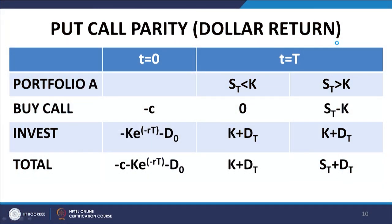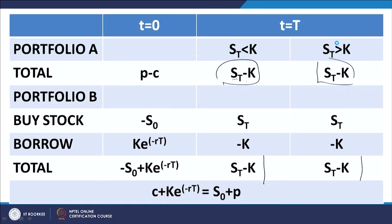We have talked about put-call parity in a very restricted scenario where there was no income related to the carrying of the underlying asset. If you recall, in one of the portfolios you bought the stock and held it from t equal to 0 to t equal to capital T, but you did not account for any income or any expense in holding this asset. In other words, we assumed there is no carrying cost and neither is there any income generated by holding the asset during this period.